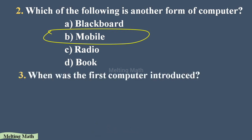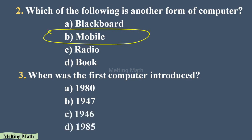The third question: when was the first computer introduced? Option A: 1980, Option B: 1947, Option C: 1946, Option D: 1985. Option C — 1946 — is the correct answer. They began working on designing the computer from around 1943, and the first computer came into operation in 1946.